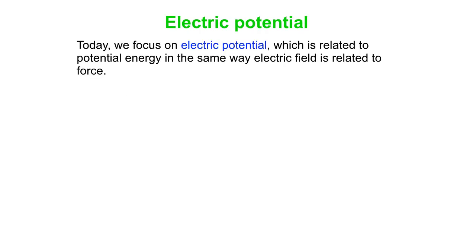So what's electric potential? It's related to potential energy in the same way electric field is related to force. Both field and potential are measures of ways that a charge or a mass influences the space around it. Here we have electric field as the force per unit charge, and potential V is the potential energy U per unit charge.